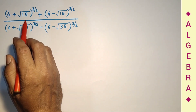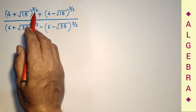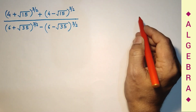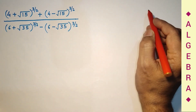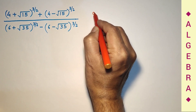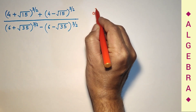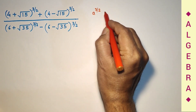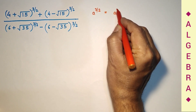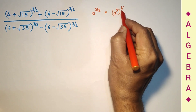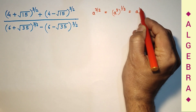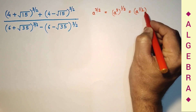In this question, the index is fractional — raised to the power 3/2. This means if there is a number, suppose a raised to the power 3/2, that means a cube raised to the power half, or a raised to the power half, raised to the power 3.